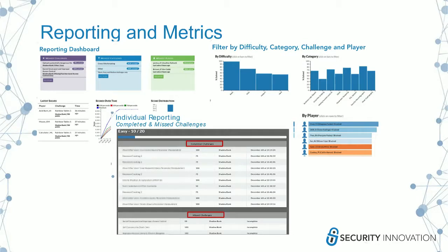Command and Control includes data dashboards and both group and individual reporting for player strengths and weaknesses. We've got real-time metrics that enable staff to monitor progress — things like the last time a vulnerability was scored or the weakest categories. If people are having trouble with something specific like cross-site scripting, you can do a breakout session. Metrics and reporting also support filtering by vulnerability category, difficulty level, and challenge type, plus individual report cards covering completed and missed challenges.